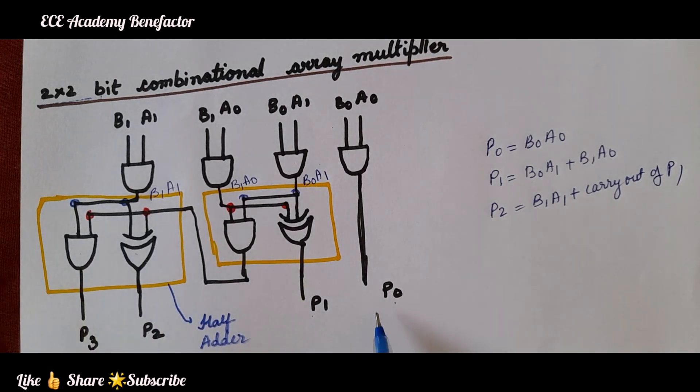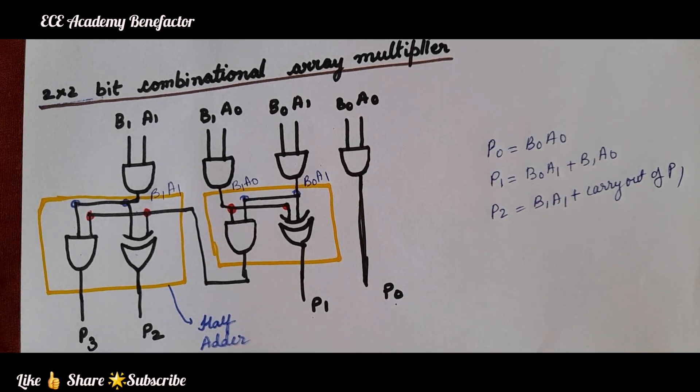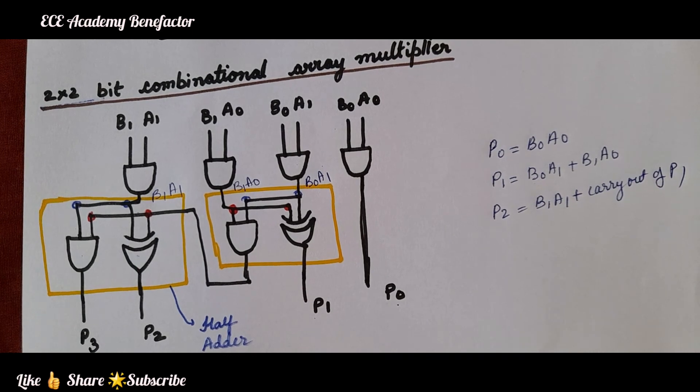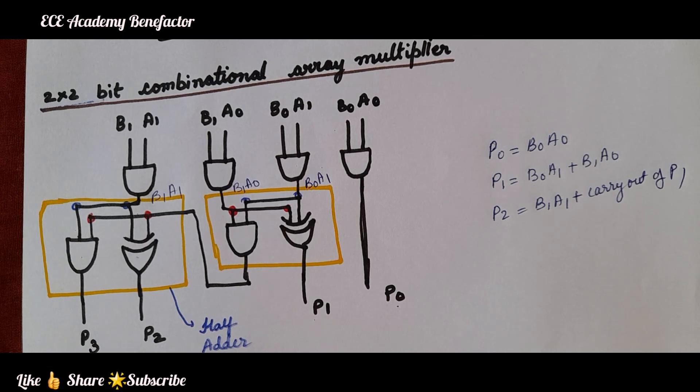In this way, we are able to generate the product p0, p1, p2, p3. I hope the design of 2 cross 2 bit combinational array multiplier is clear. Thank you. Good luck students.